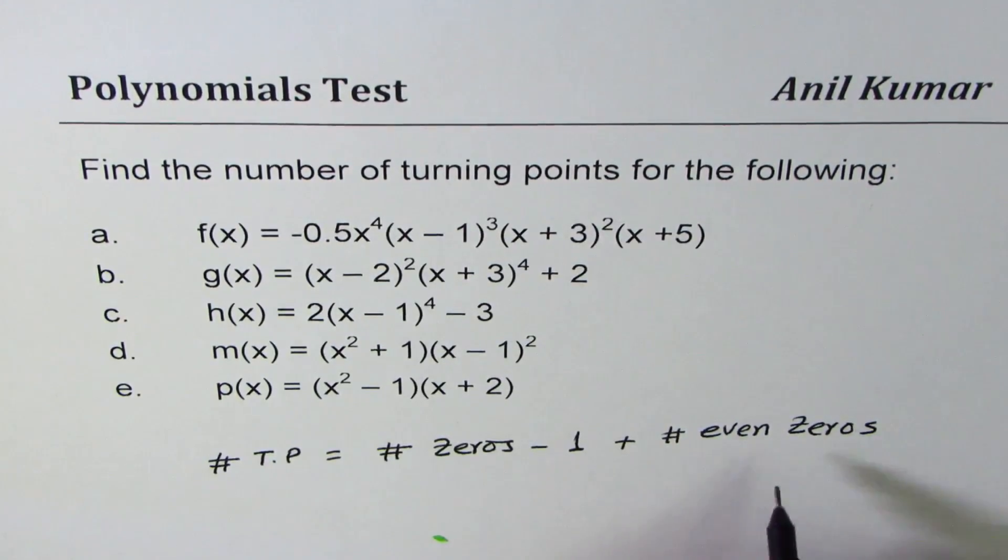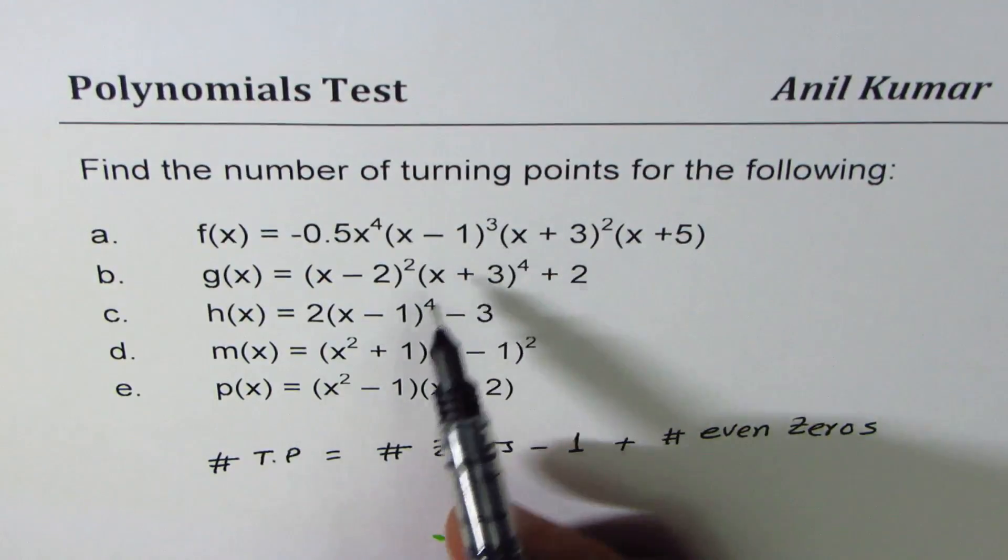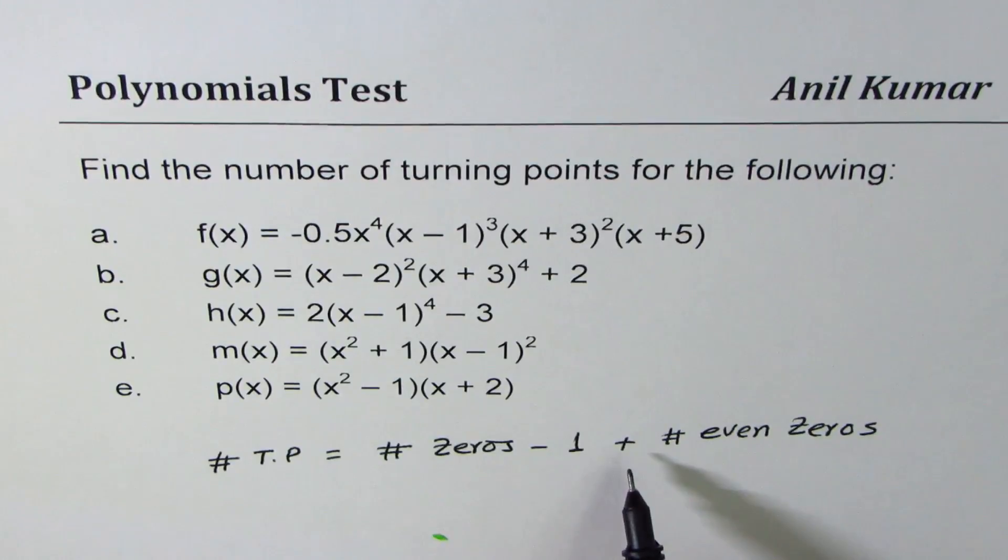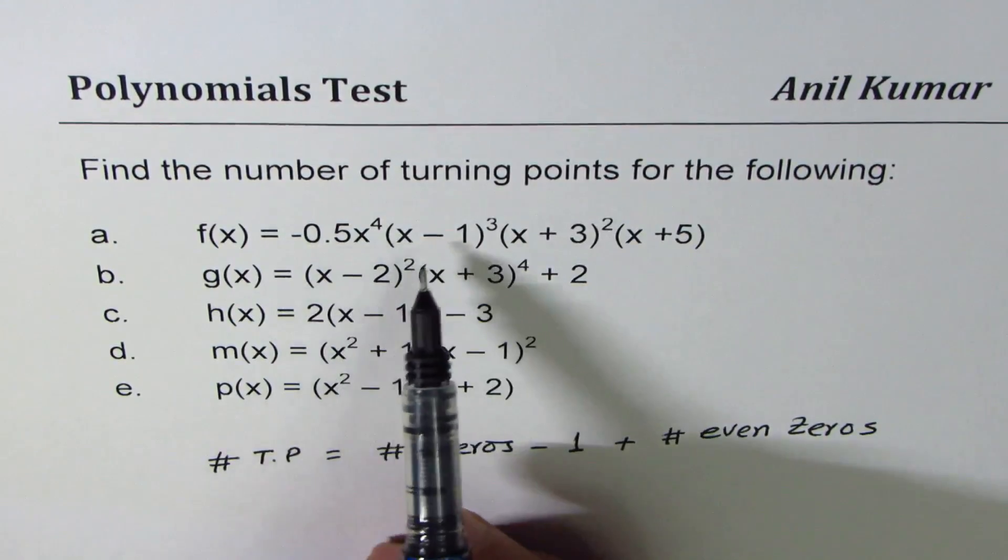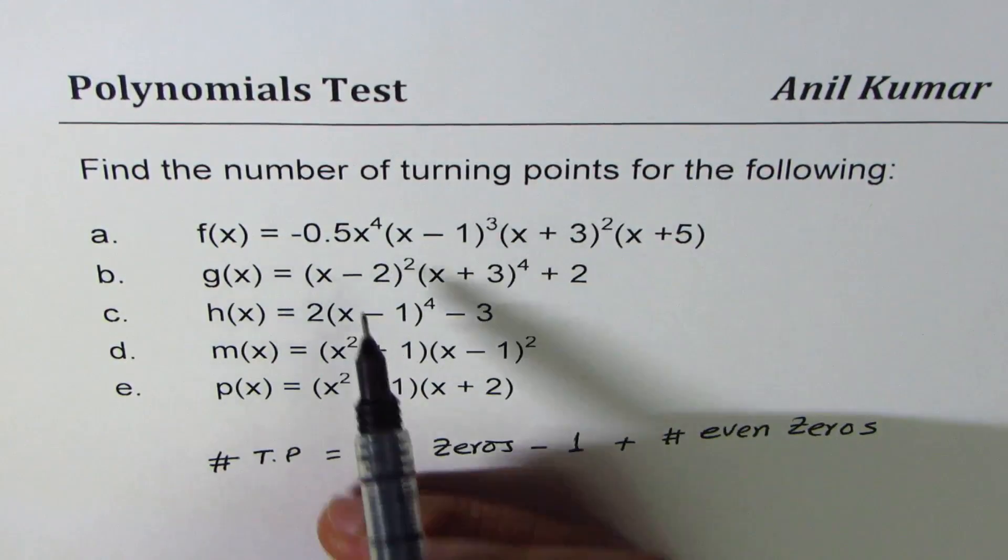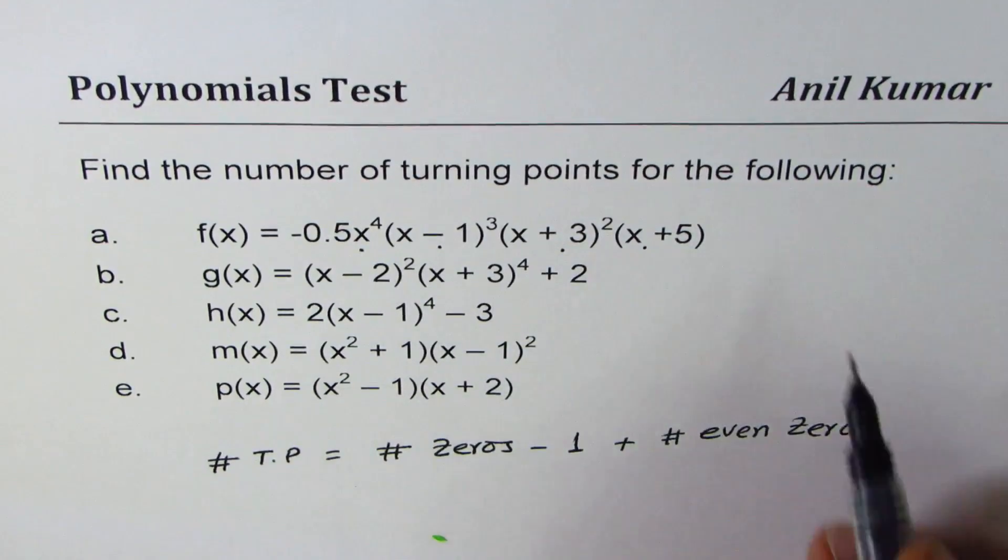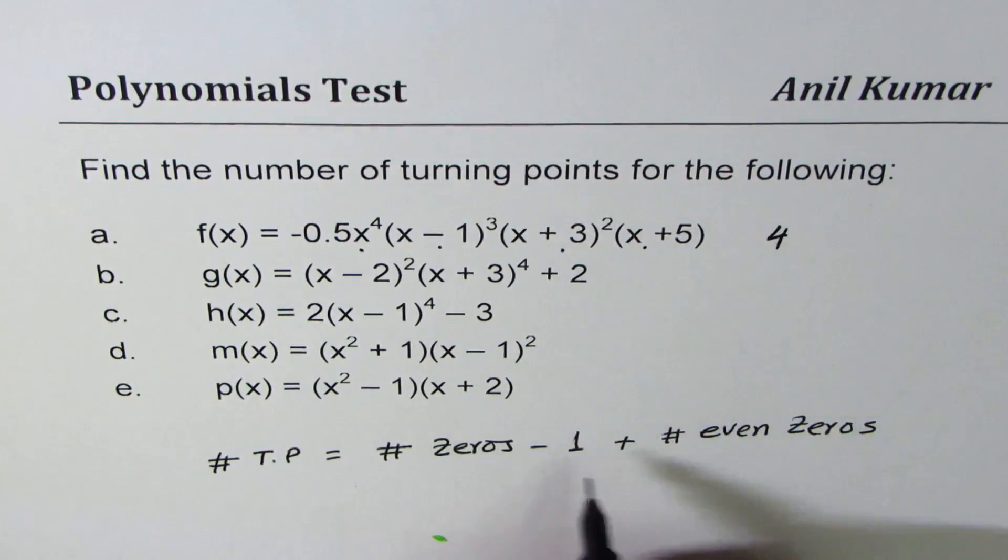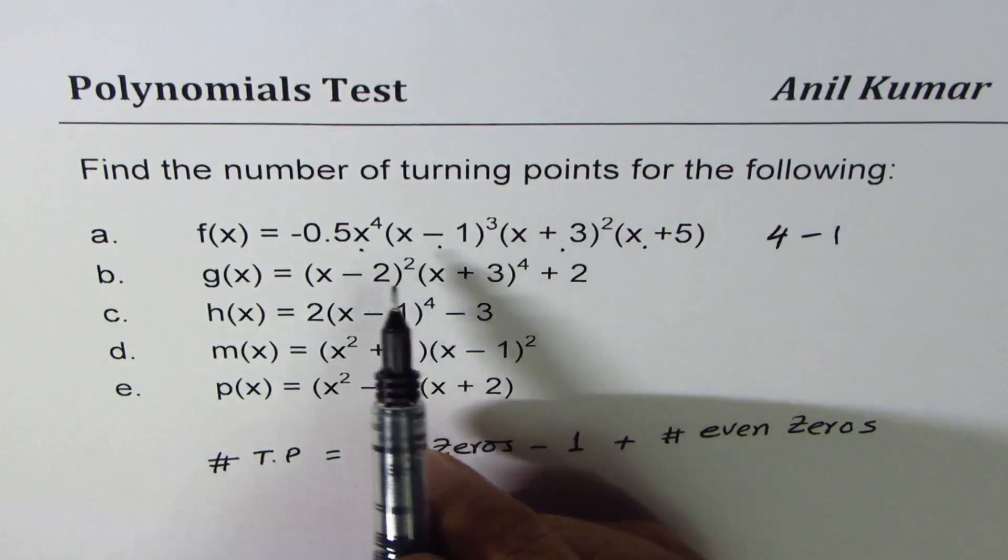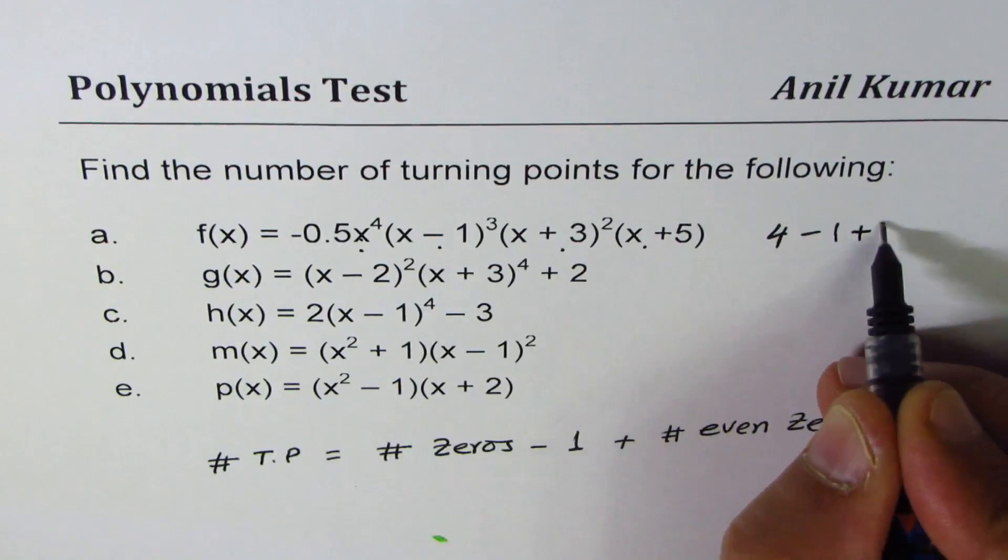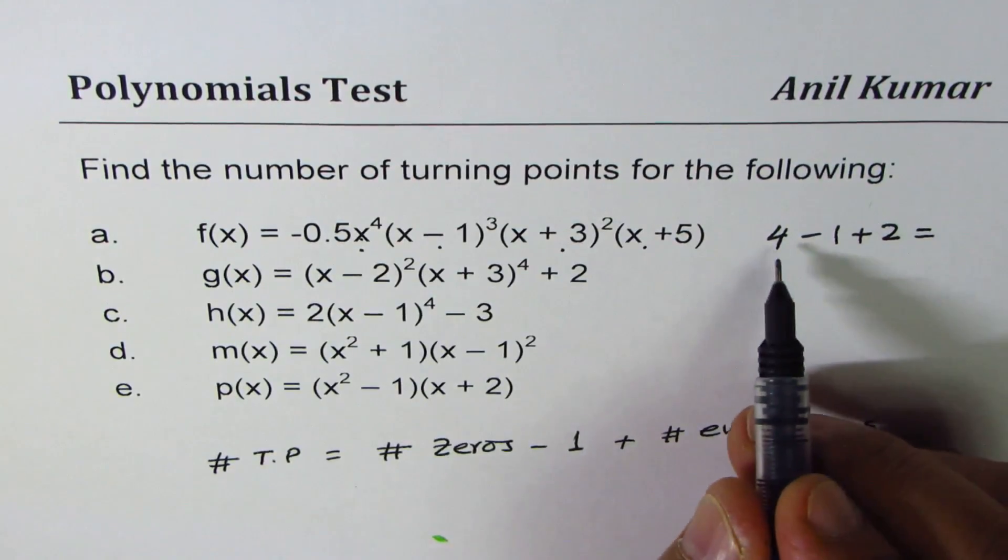So we'll use this formula to find number of turning points. You can always sketch these functions and figure out the answer. In the first one, we have 1, 2, 3, 4 zeros, so we get 4 zeros minus 1, and even zeros are 1 and 2, so plus 2. That gives us 4 minus 1 is 3, and 3 plus 2 is 5, so that is the number of turning points.